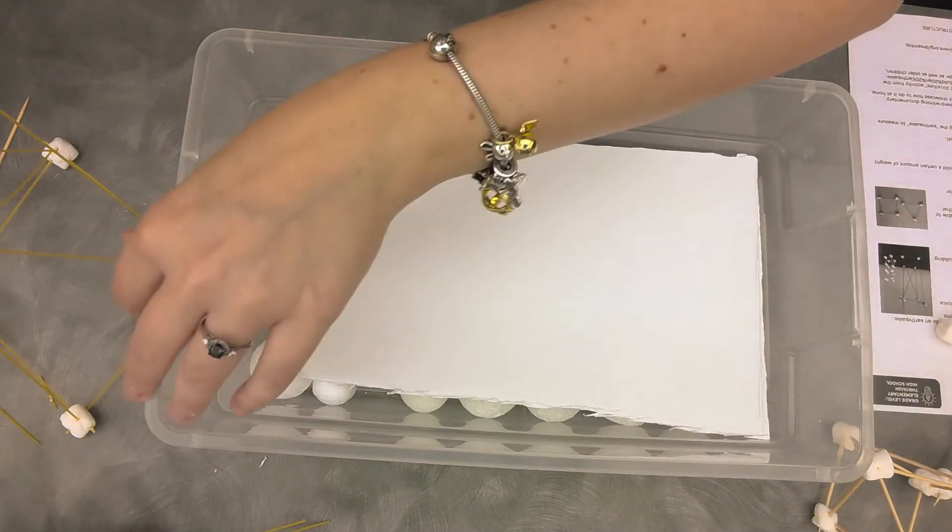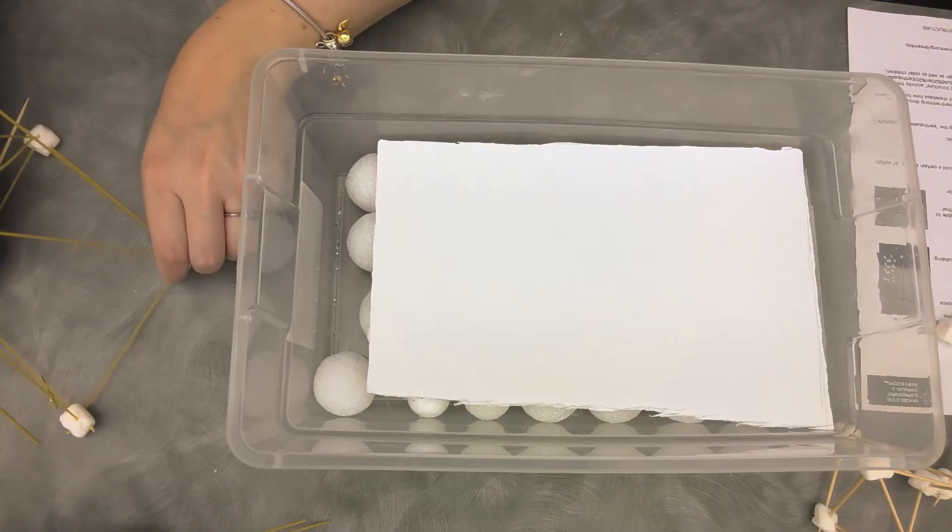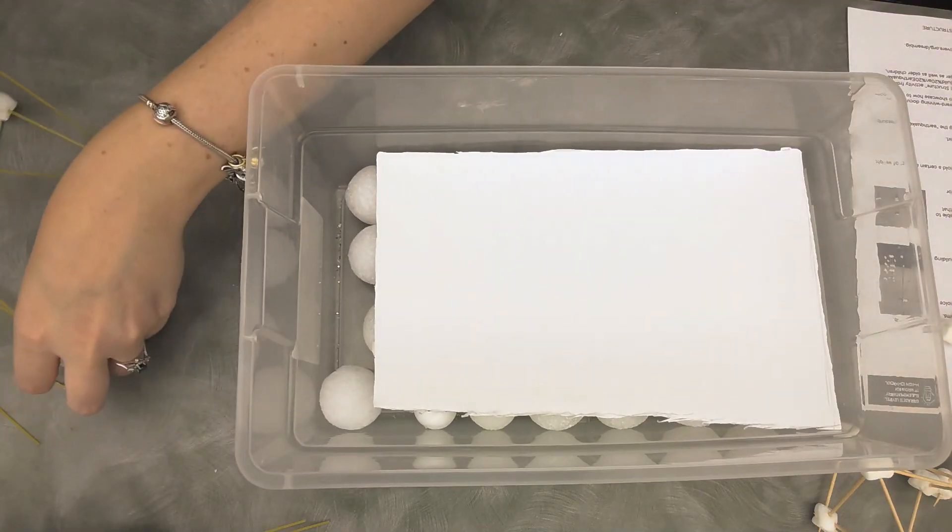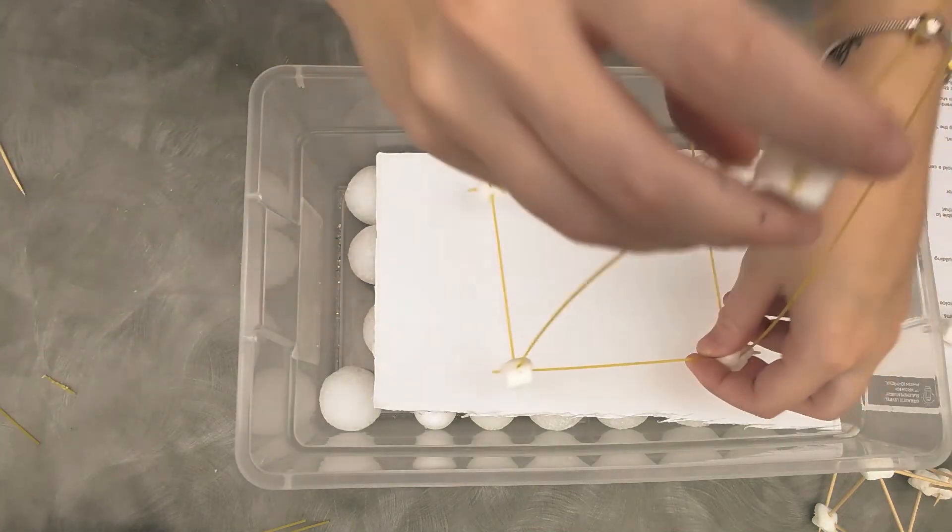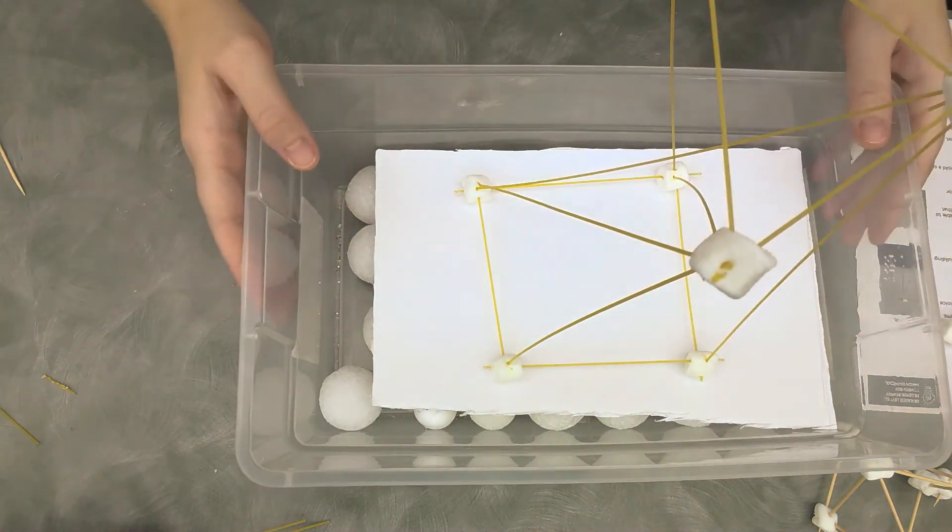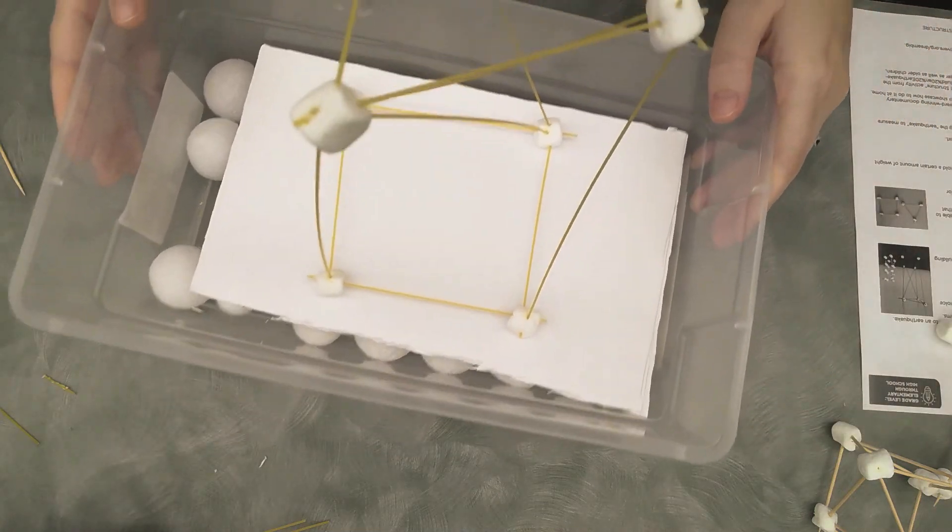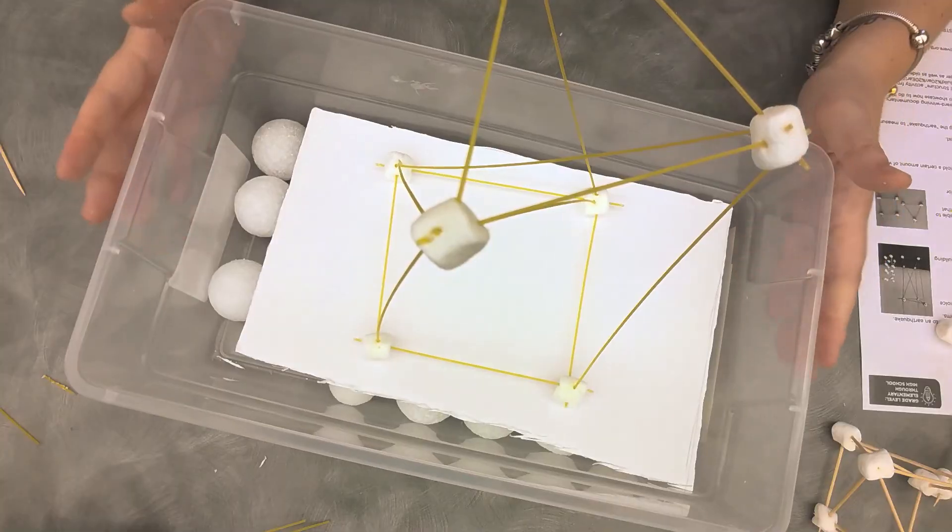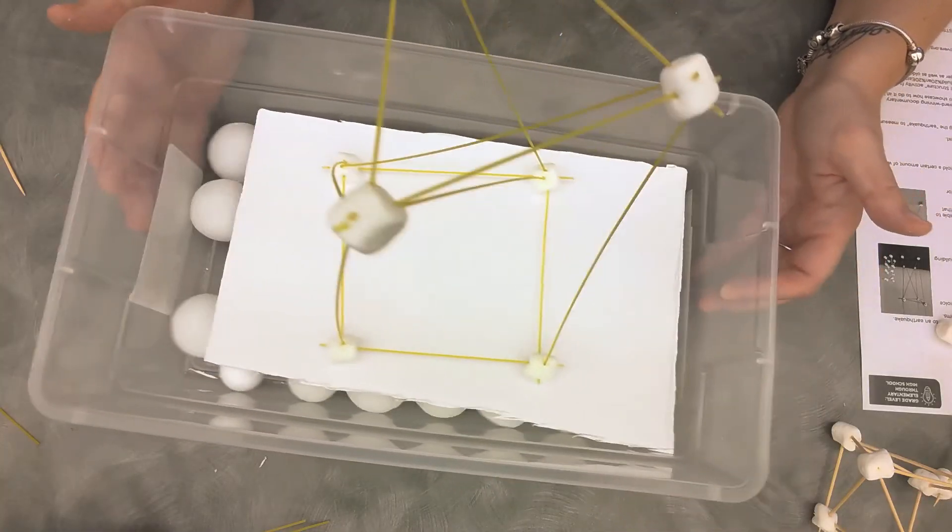Now I'm going to test my pasta one. And this one, I have to be very careful because this pasta is very thin. So for this one, I made a cross beam. You can see the X there. So that's the cross beam I made. So I'm going to test this one out, start with a little shaking.